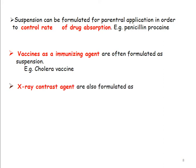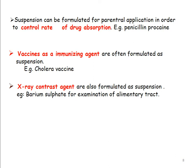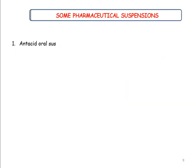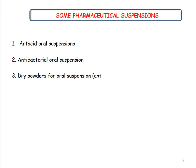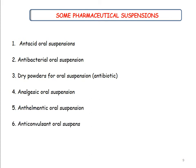Vaccines as immunization agents are often formulated as suspensions, for example cholera vaccine. Suspension is also used as x-ray contrast media for diagnostic tests of the alimentary canal — barium sulfate suspension is used as x-ray contrast media. Formulations of suspension include: antacid oral suspensions, antibacterial oral suspensions, dry powder for oral suspension especially in case of antibiotics, antacid analgesic oral suspension, anticonvulsant, and antifungal suspensions.